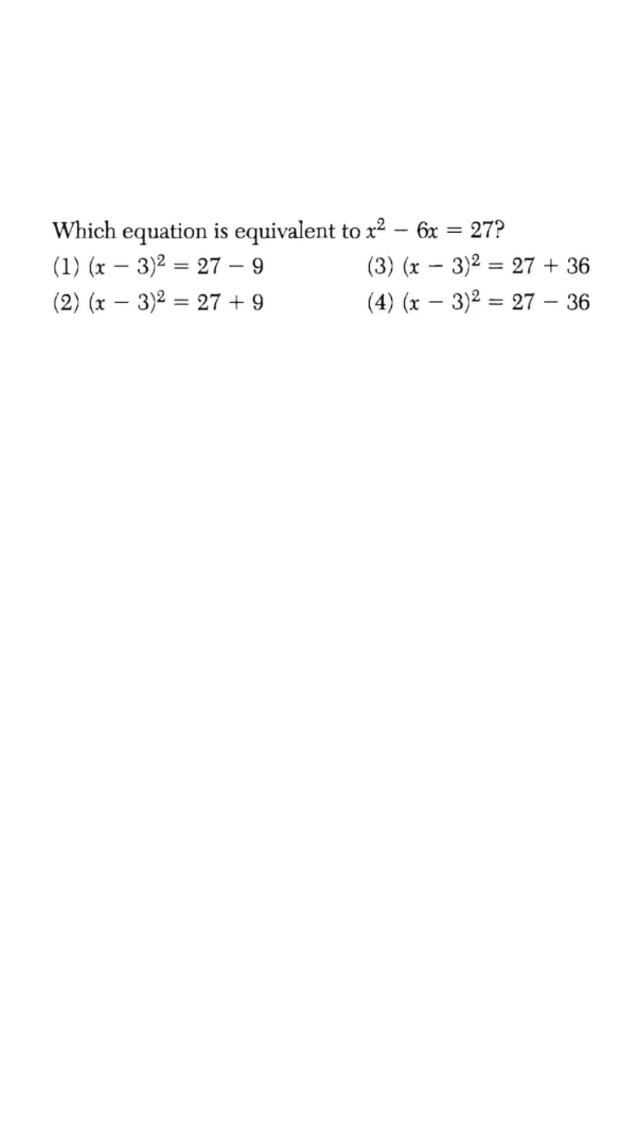Come up with an equivalent expression to the one that they gave us below: x squared minus 6x is equal to 27. And for us to do this, we're going to have to complete the square. One thing to be mindful of is sometimes they're going to give it to us as a trinomial like this where we have to go ahead and isolate that c term, but in this problem they already moved the c term.